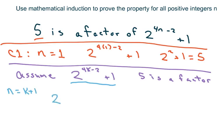So we have 2 to the 4 times (k plus 1) minus 2 plus 1. Oops, that's not a k, that's a 4. Okay. Plus 1. Now, cleaning this up, I'm going to write this as 2 to the 4k plus 4 minus 2 plus 1.